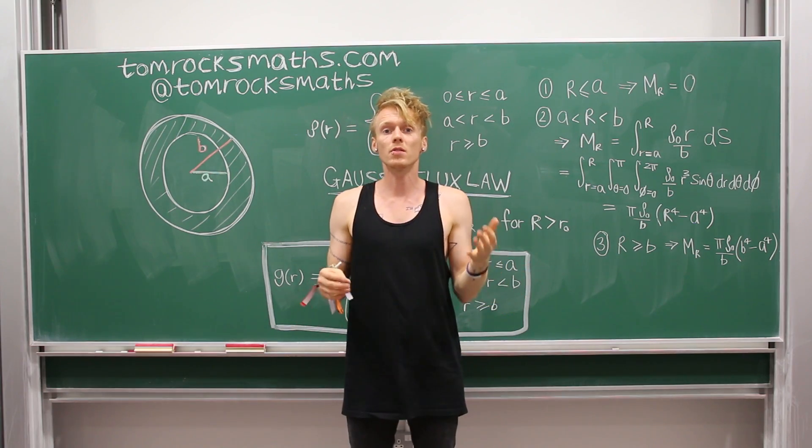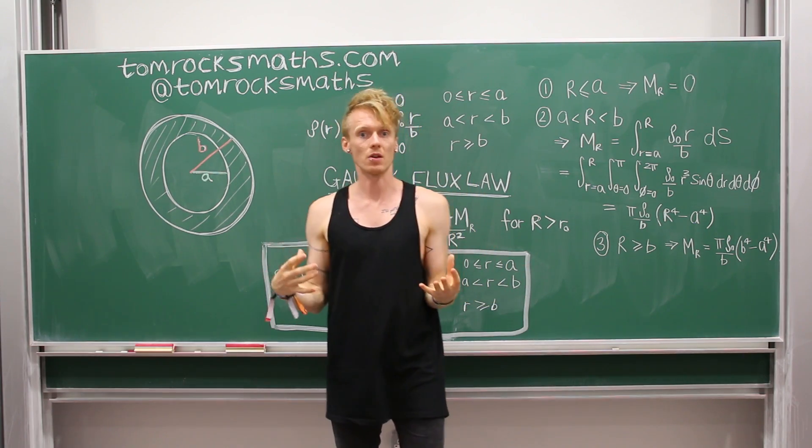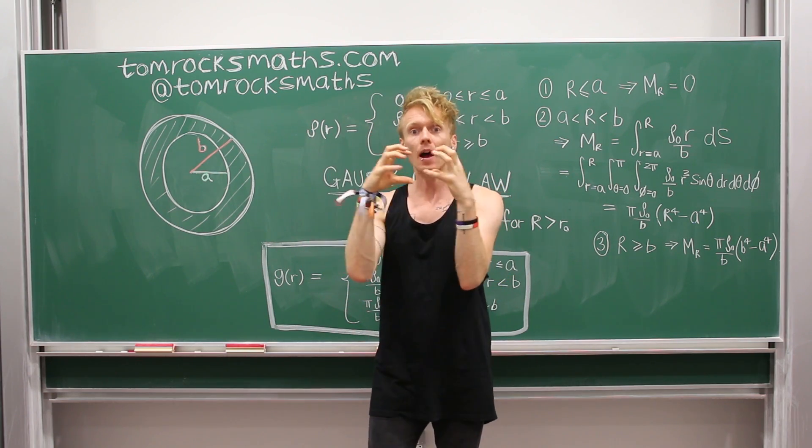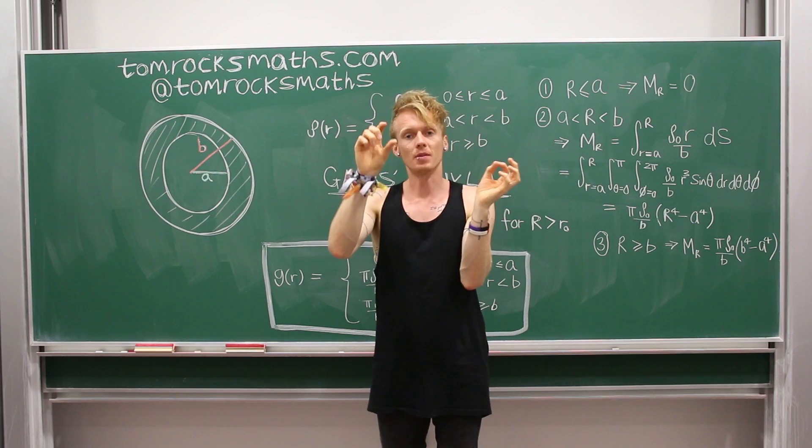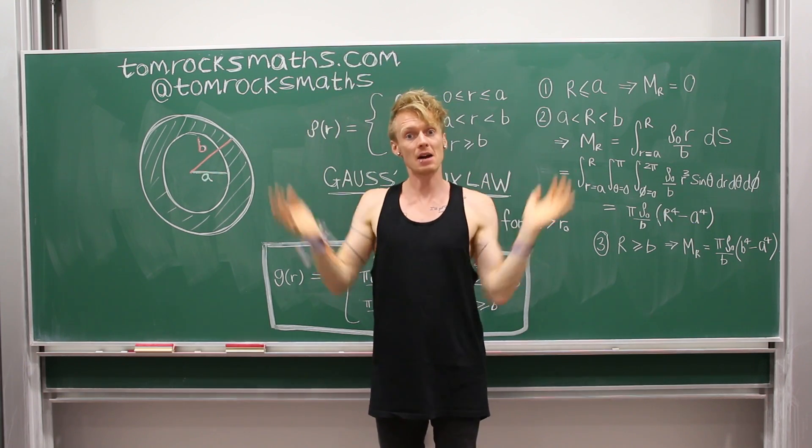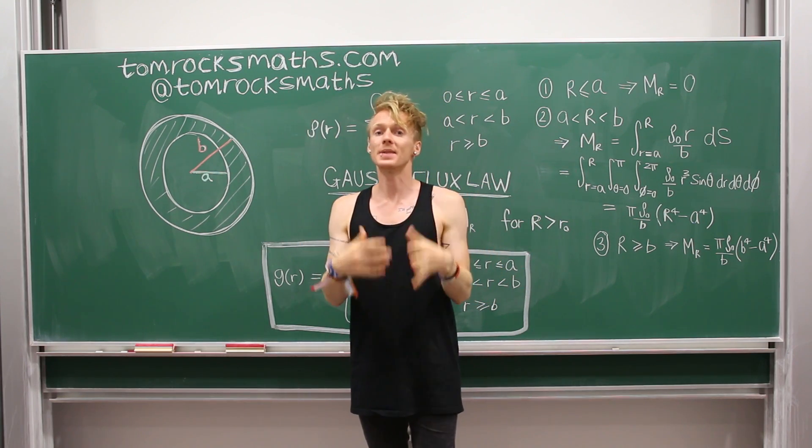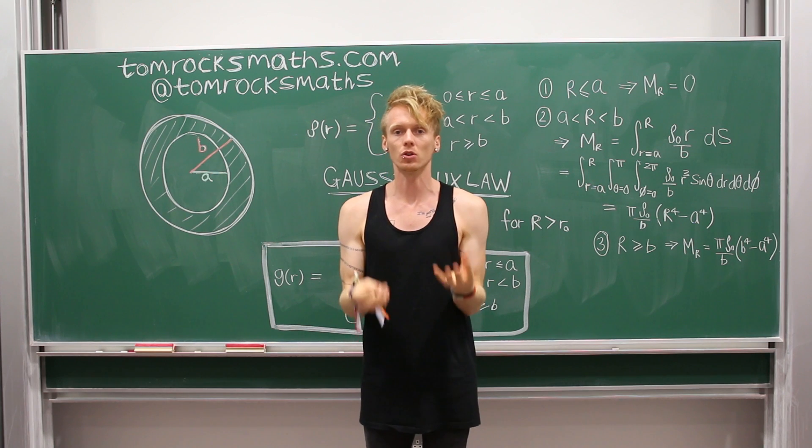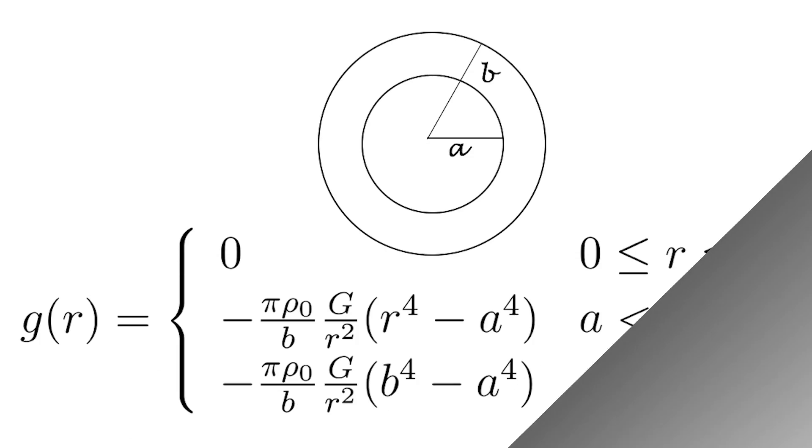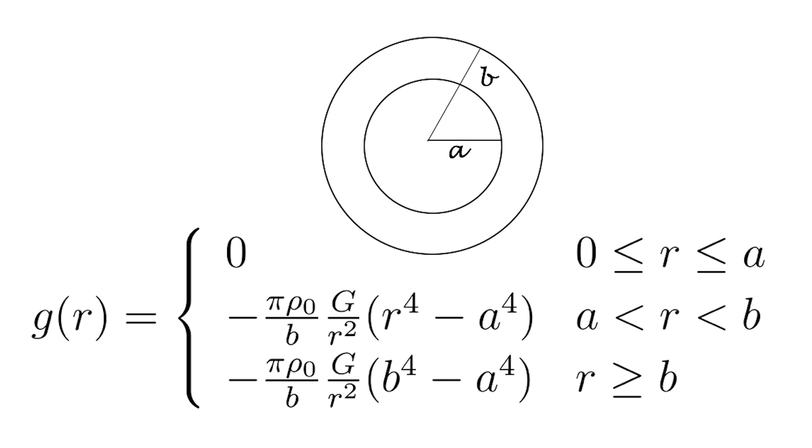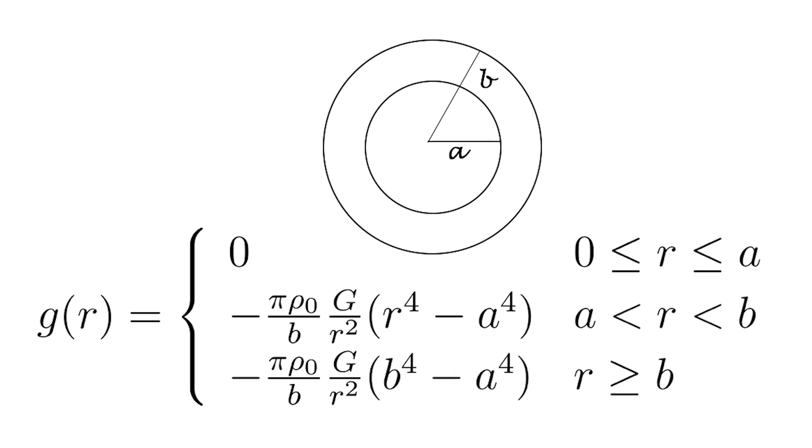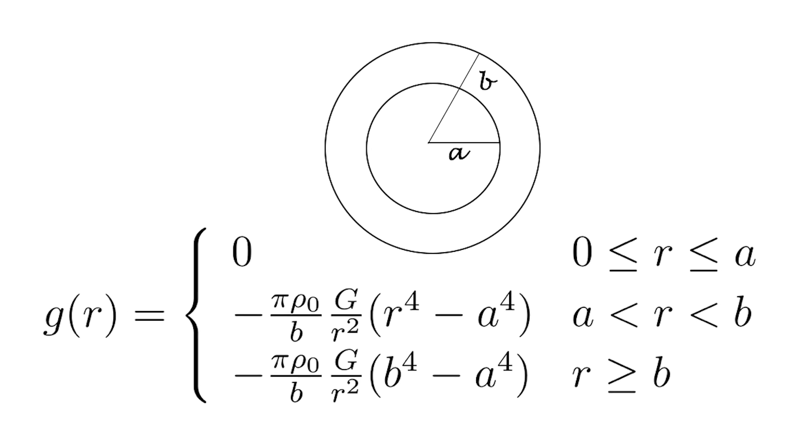Now that we know the gravitational field in the three different areas, so we know it inside the hollow part of the planet, we know what it is inside the shell of the planet, and we know what it is outside, we just put all three pieces together to get the full gravitational field. So at any distance from the centre of our hollow planet, the gravitational field is given and well-defined by this function.